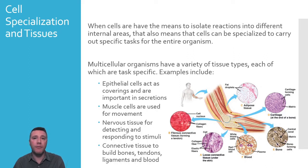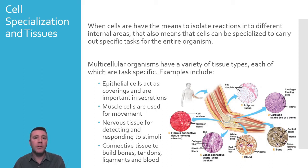Plants have a few tissue types that are unique to them: ground, dermal, and vascular, which all have different sets of functions to accomplish. The same is true for multicellular fungi, which possess five different tissue types.